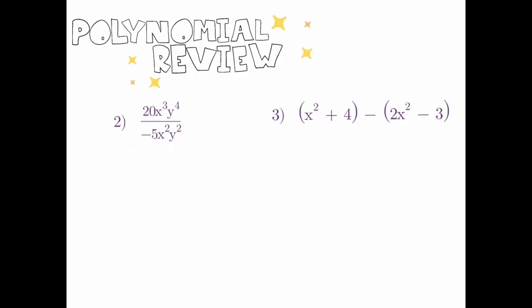Let's move on to example number 2. We have two monomials that are divided. To answer this question, I begin by looking at my coefficients — the numbers without any letters. 20 divided by negative 5 — we're lucky because these divide to give us a whole number. But even if they didn't, you would just simplify the fraction and leave the answer as a fraction.